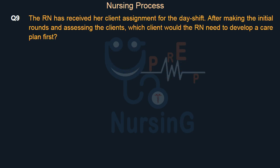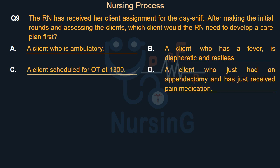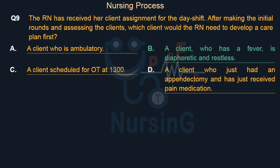The RN has received her client assignment for the day shift. After making the initial rounds and assessing the clients, which client would the RN need to develop a care plan for first? Option A: A client who is ambulatory. Option B: A client who has a fever, is diaphoretic and restless. Option C: A client scheduled for OT at 1300. Option D: A client who just had an appendectomy and has just received pain medication. Right answer is Option B: A client who has a fever, is diaphoretic and restless.